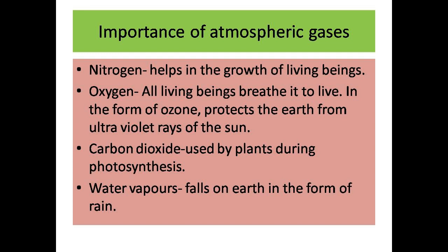Carbon dioxide exists in the Earth's atmosphere as a colorless and odorless gas. It is produced by all animals, fungi, and microorganisms during respiration and is used by plants during photosynthesis. Carbon dioxide also helps in creating the greenhouse effect — without the greenhouse effect it would be too cold for life to exist on the planet. Water vapor is constantly generated by evaporation and removed from the atmosphere by condensation. Atmospheric water vapor falls on the Earth as rain, which is very important for agriculture and is also a source of fresh water.